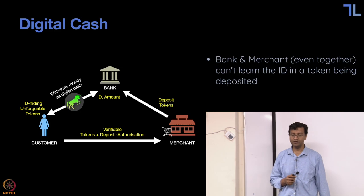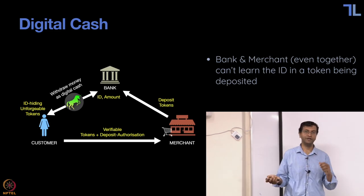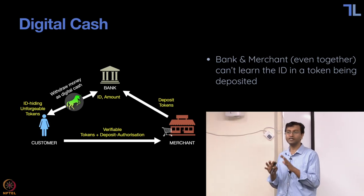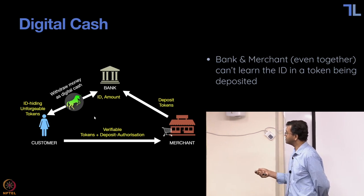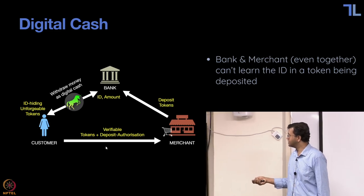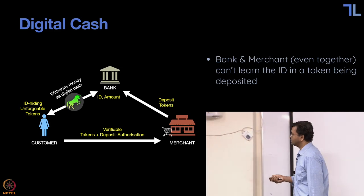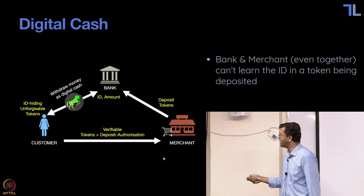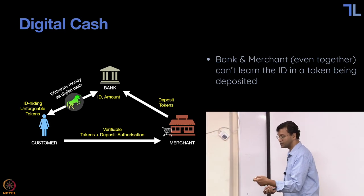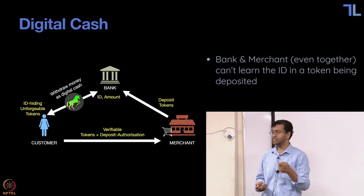What are the requirements we want from this digital cash system? One thing is anonymity — you don't want fake money, but on top of that you also want anonymity. Even if the bank and the merchant get together, they shouldn't be able to see from whom a given token came. Even if the bank gets together with the merchant, when they see that deposited token, they shouldn't be able to trace it back to which issuing protocol it came from. That's unlinkability — they shouldn't learn the ID in the token.